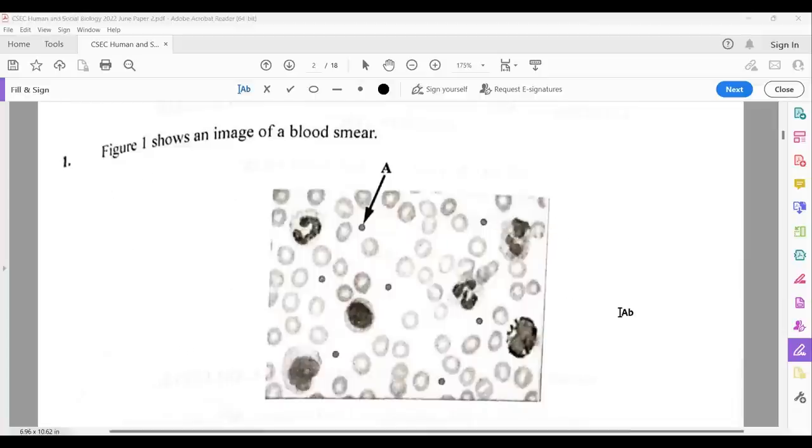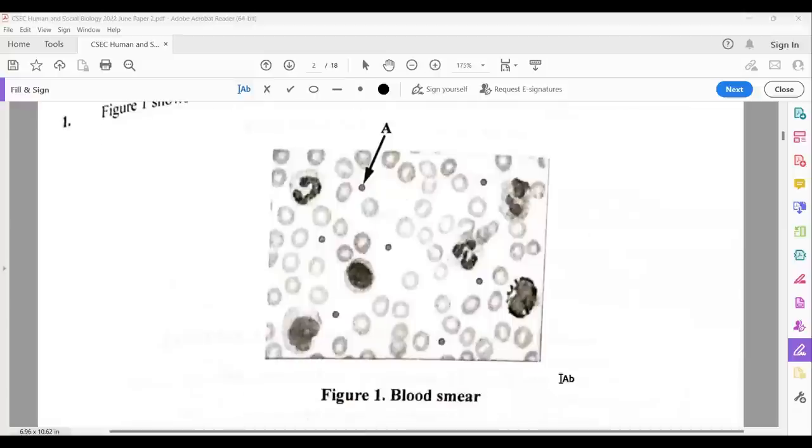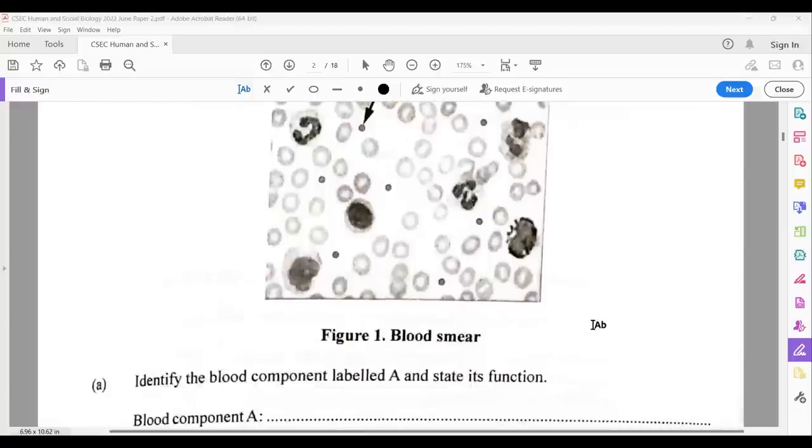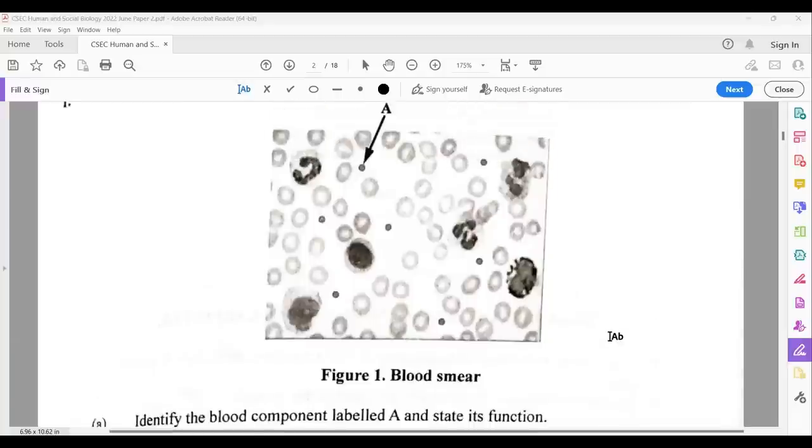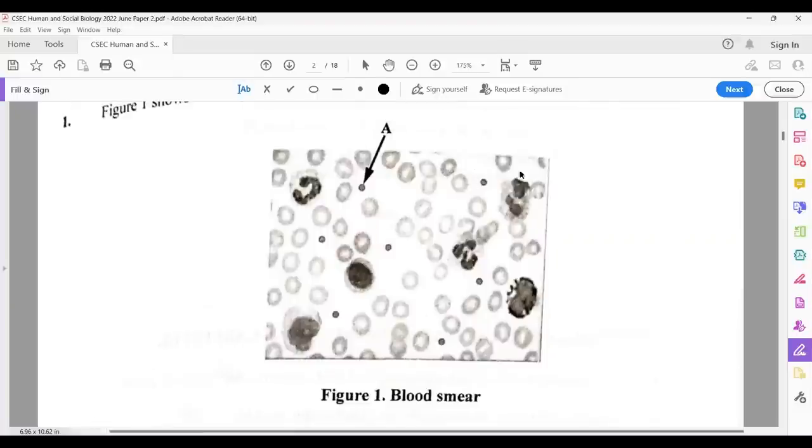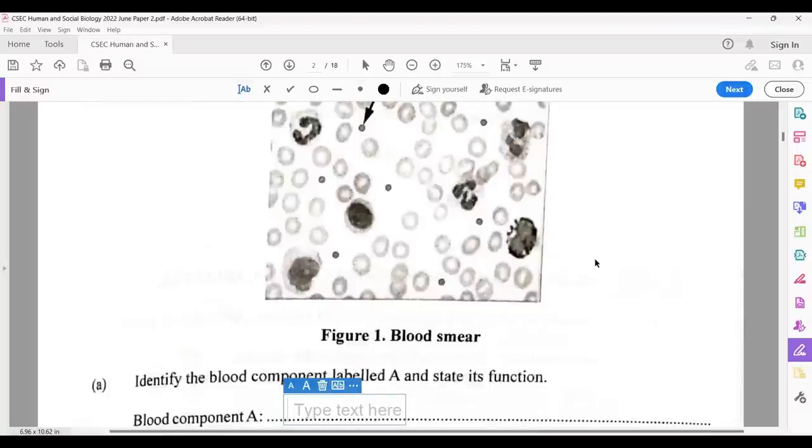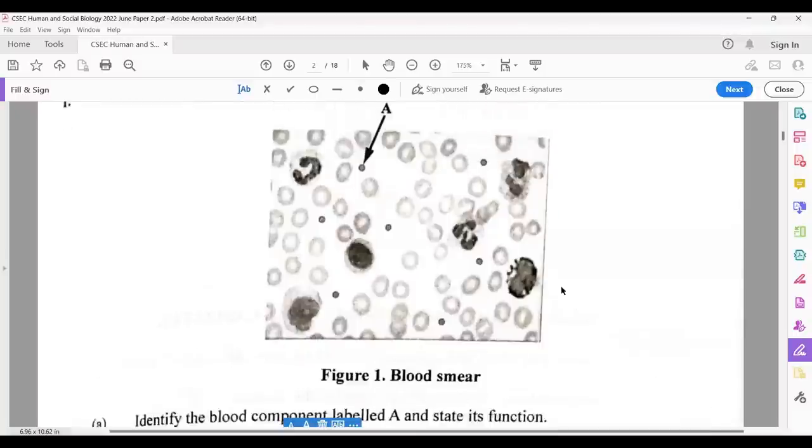Figure one shows an image of a blood smear. They ask you to identify the blood component labeled A and state its function. If we are watching these components, we see most of the image made up of these blank cells. We see a cell like this, and we should be able to identify that if this is a blood smear, it has different components. A, being the smallest of the components, means we are looking at platelets. This section here, this cell is a white blood cell, it's a lobed nucleus, which means we are talking about a phagocyte.